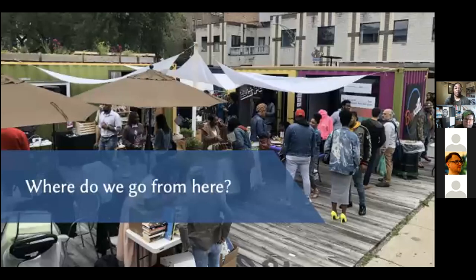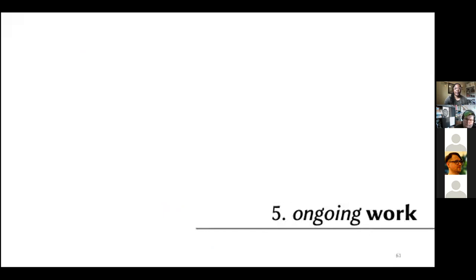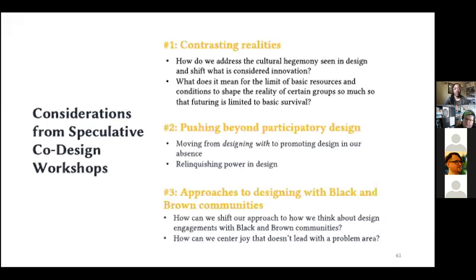Where do we go from here? Branching off from these speculative co-design workshops, based on implications that stood out from that project. Number one: thinking about the contrasting realities that certain groups face when thinking about speculative futures, and how do we frame futuring and speculation to be inclusive and equitable — particularly if some groups are envisioning livable wages, fair housing, and anti-racist systems. Where is there space for true radical imagination and innovation, and how can design provide balance there?